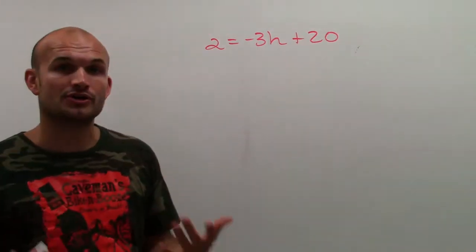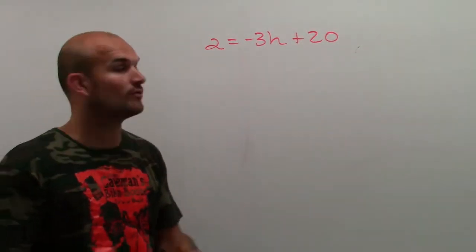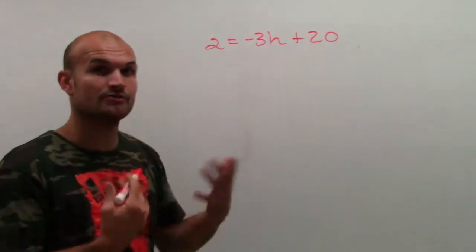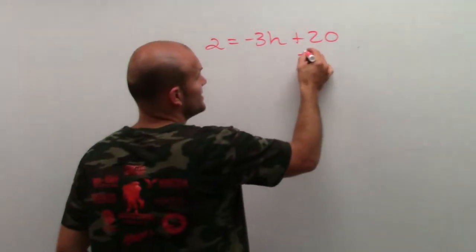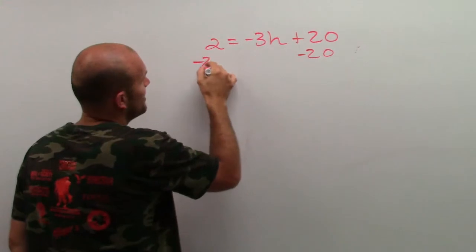In this example, we're going to undo addition and subtraction before we undo multiplication. So to undo addition, remember, we're going to subtract, and we need to make sure we subtract on both sides.